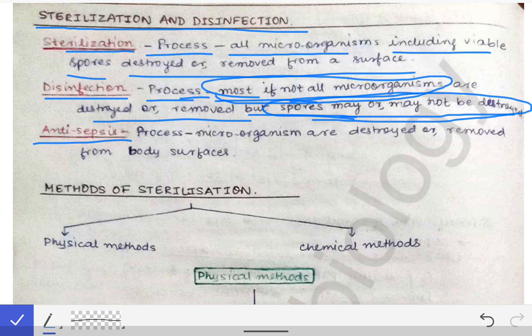The third definition is antisepsis. Antisepsis is a process by which microorganisms are destroyed or removed from body surfaces. When we remove microorganisms from body surfaces, we call it antisepsis. For physical surfaces of any object or machine, we use the terms sterilization and disinfection; when talking about the surface of a living organism, we call it antisepsis.